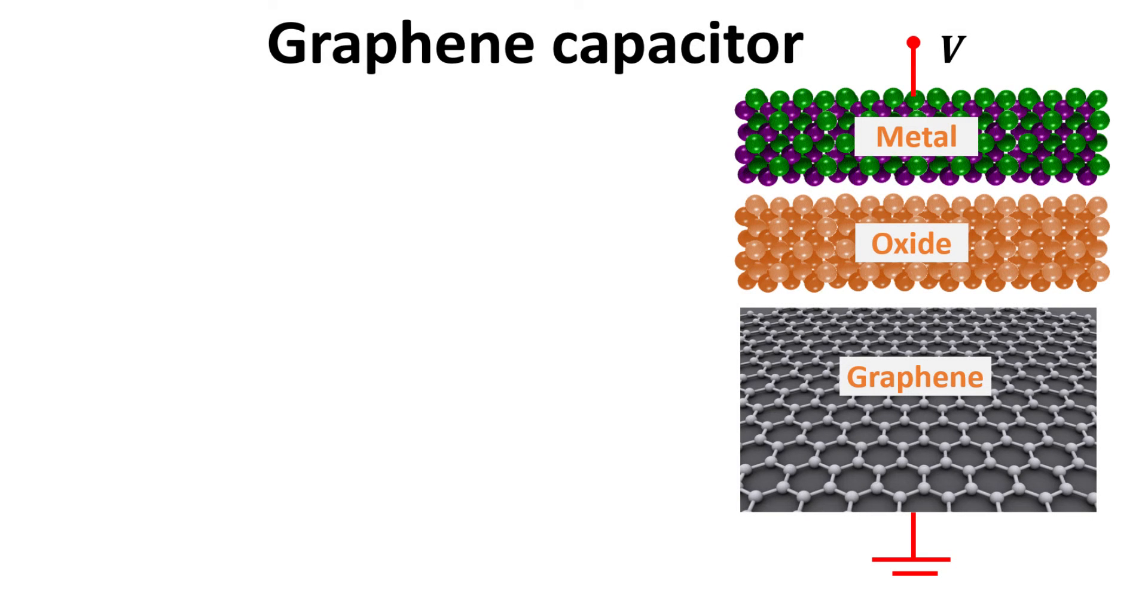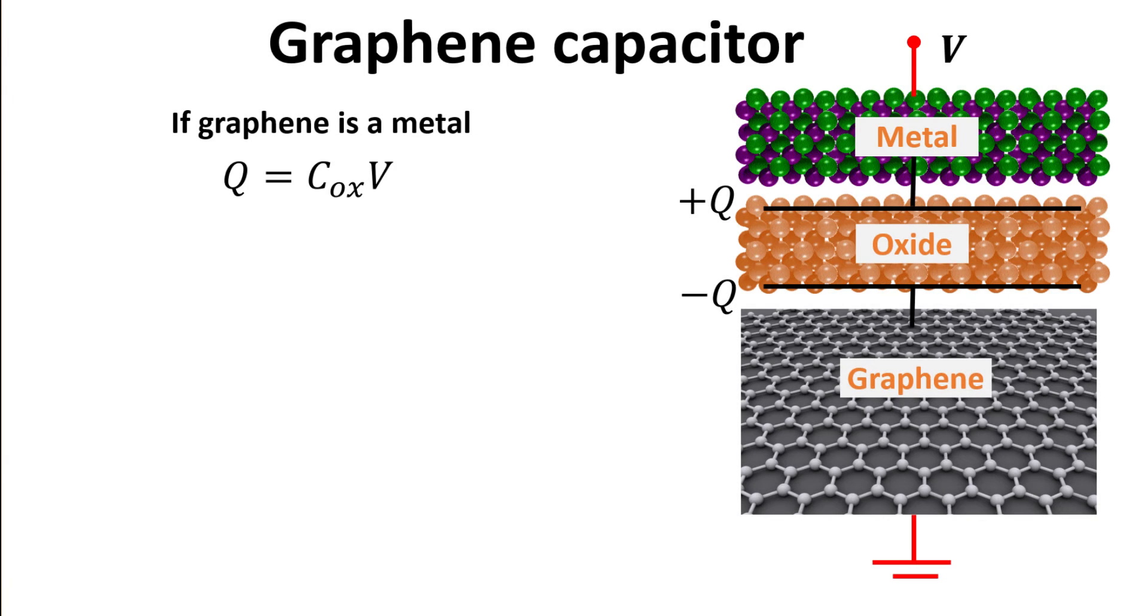Consider applying an electric voltage across the capacitor stack. If graphene is a metal, then the charge Q induced in graphene is simply given by the oxide capacitance, C-ox, times the applied voltage V.